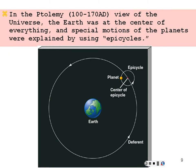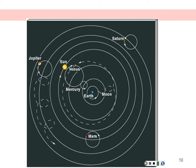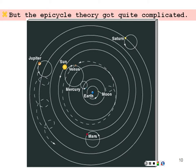Ptolemy, around 100 to 170 A.D., had a geocentric model where the Earth was at the center and planets went around the Earth on a main path called a deferent. Every once in a while, they would enter an extra circle called an epicycle, which helped explain the backward loop-de-loop motion. But if you were a good astronomer, you'd find that to truly explain all the positions of the planets, you needed epicycles upon epicycles — it became very complicated.